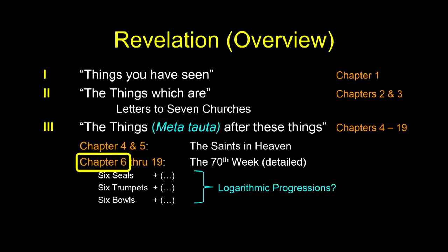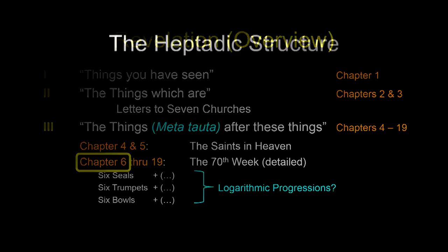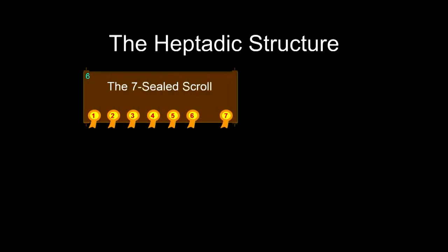Chapter 6 through 19 details the period of time we know as the 70th week of Daniel. The 69 weeks are shockingly, precisely fulfilled. But there's one week — a group of seven years — left. They will include six seals that are opened, six trumpets that are blown, and six bowls. Each of these are somewhat a logarithmic procession. There's always six things and then a change of subject — what we call a parenthetical segment — before you get to the seventh.